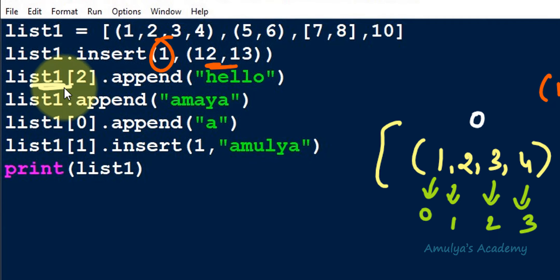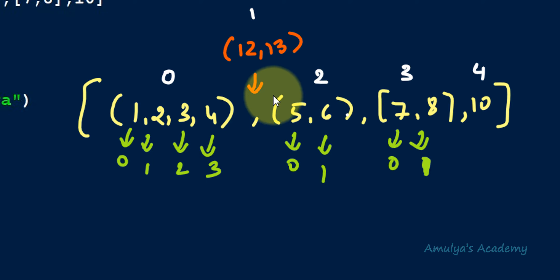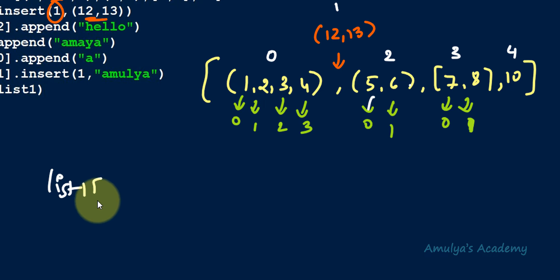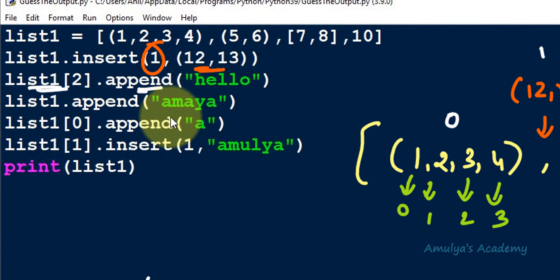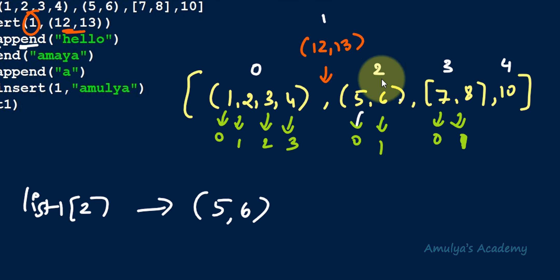In the next line, list1[2].append('hello') is called. After the insert operation, list1[2] is the tuple (5, 6). Since a tuple is immutable, we cannot modify it after creation — we can't insert or append any value to a tuple. That's why performing append on list1[2], which is a tuple, causes the error.